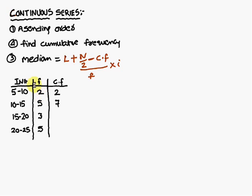The first frequency is 2. Write it here as usual. 2 plus 5 is 7. 7 plus 3 is 10. 10 plus 5 is 15. This is the way to find out how to write the cumulative frequency.